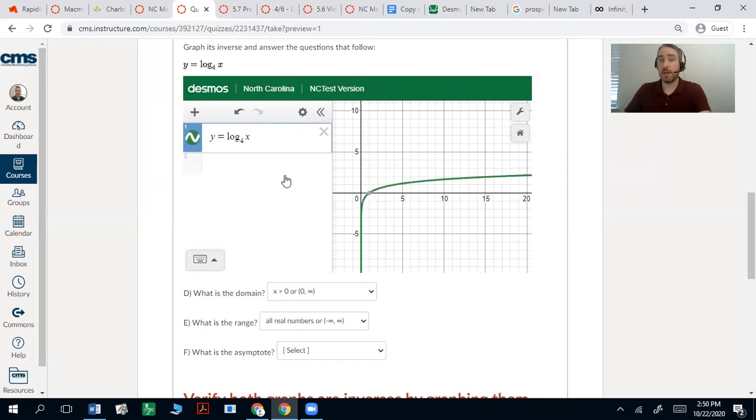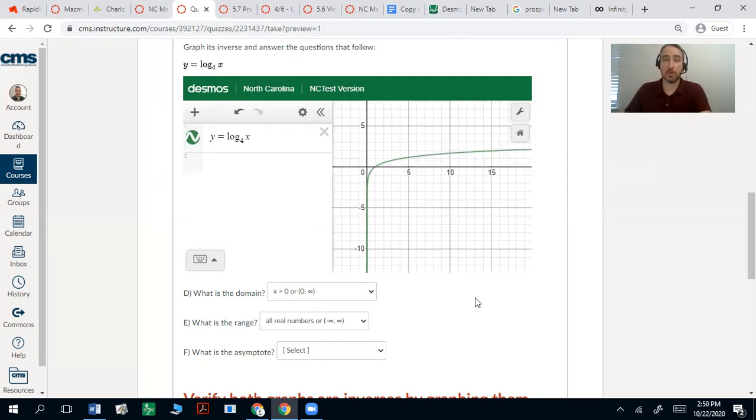So y can be anything, all real numbers. Now the asymptote is going to be vertical this time because it never goes to the left of the y-axis. The y-axis is x equals zero. That's a vertical asymptote.